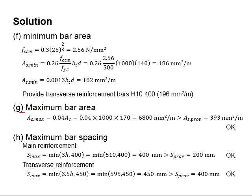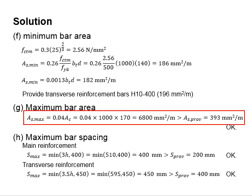You may check for the maximum bar area, which is equal to 4% of the cross sectional area of the slab. But as the cross sectional area of the slab is normally relatively large, normally we will have the maximum bar area passed.